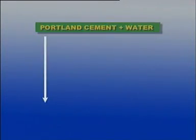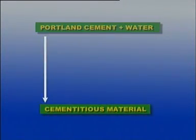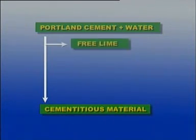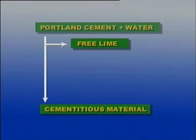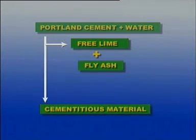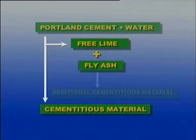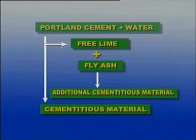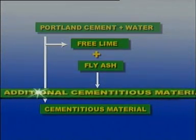Portland cement when mixed with water produces cementitious material. In this process, some free lime is also liberated. This free lime is the cause of porosity in the concrete. However, if fly ash is available in the mix, the free lime reacts with fly ash to produce additional cementitious material, which produces additional strength and makes the concrete denser, thus increasing its durability.